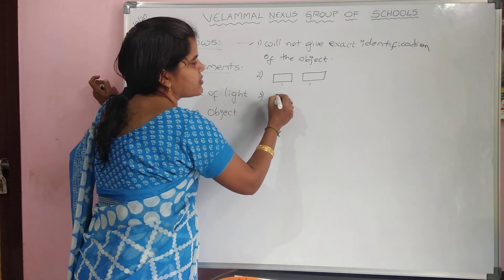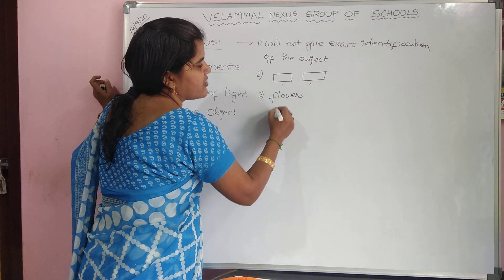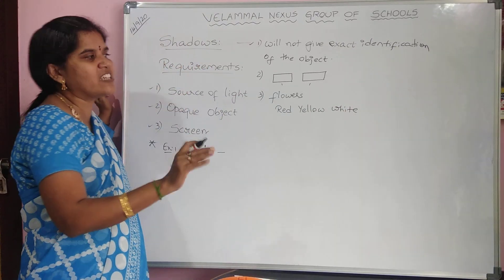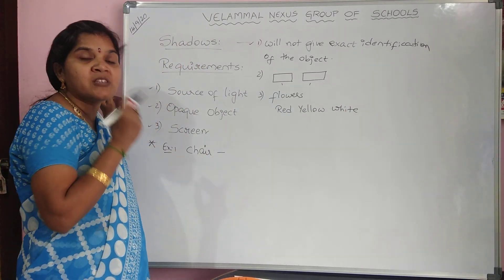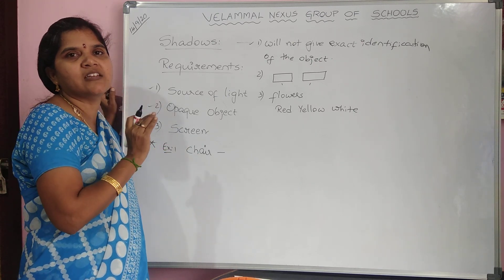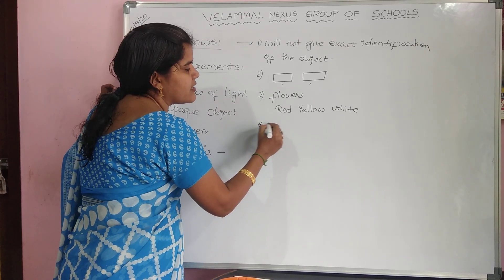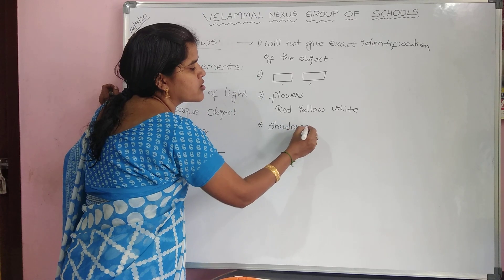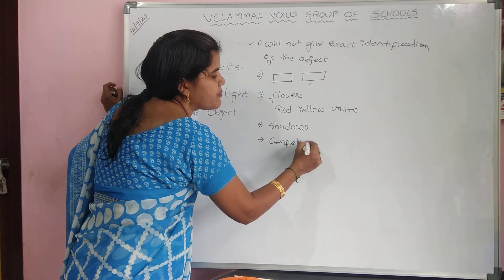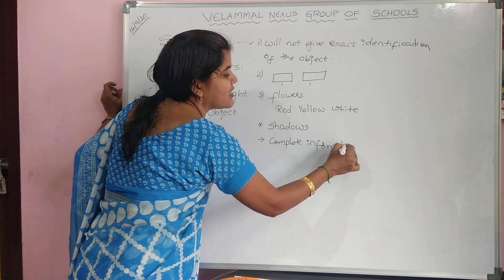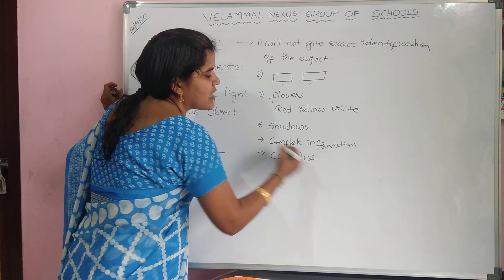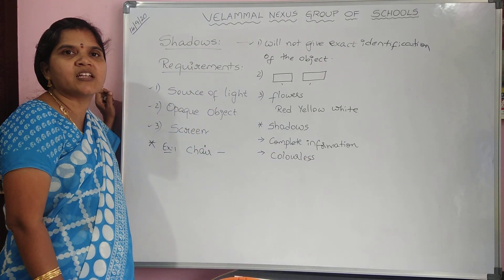Shadows will not give you complete information about the object — they will mislead you. Color identification will also not be there, as shadows are colorless dark patches. You cannot tell which color a flower is by looking at its shadow, since all shadows appear as dark patches.